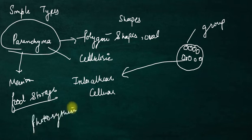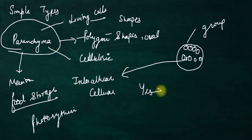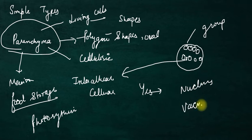Remember that parenchyma tissues are made from living cells. They also have a nucleus in their cells, and they have large vacuoles as well, which we will study in earlier cell chapters.